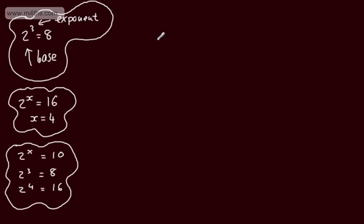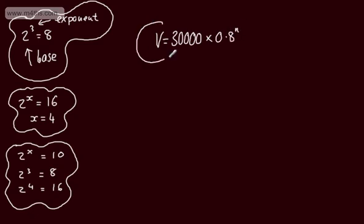Let's look at the value of a car. The value V pounds will be its starting price of £30,000, with an annual depreciation of 20%, giving a multiplier of 0.8 raised to the power of N, where N is the number of years. If I wanted to find the value after one year, N would be 1; two years, N would be 2. But if I wanted to find the age of the car when it was worth £5,400 or £6,800, this is where we would use logs.